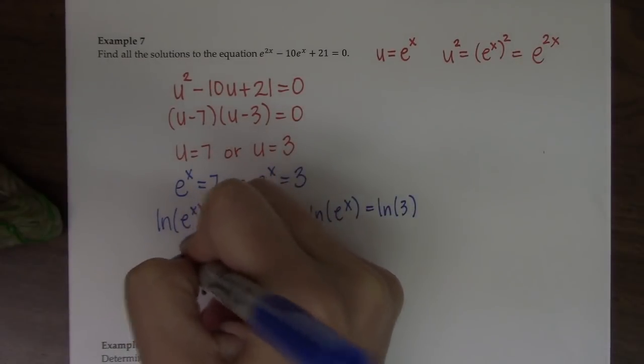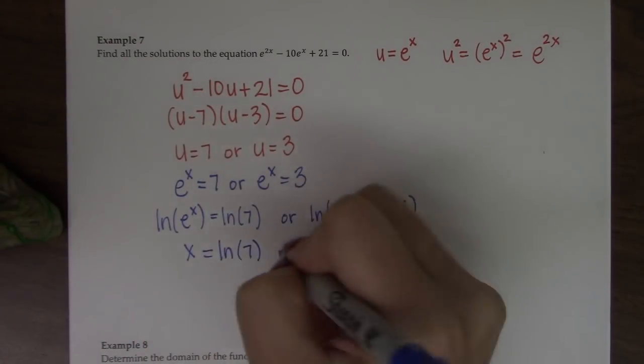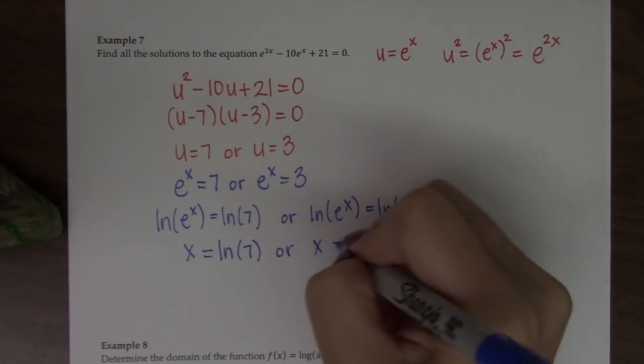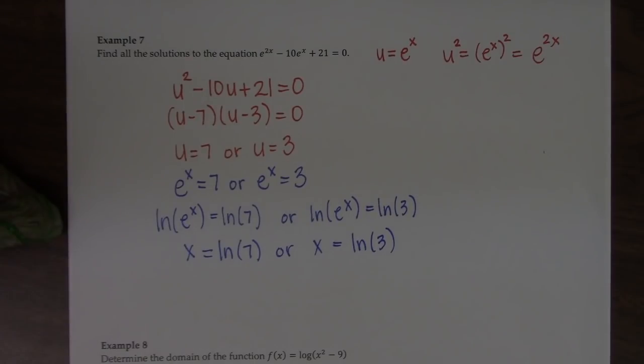So this reduces to x is the natural log of 7 or x is the natural log of 3. And it should feel totally normal that we got two answers because we get two answers out of quadratics all the time.